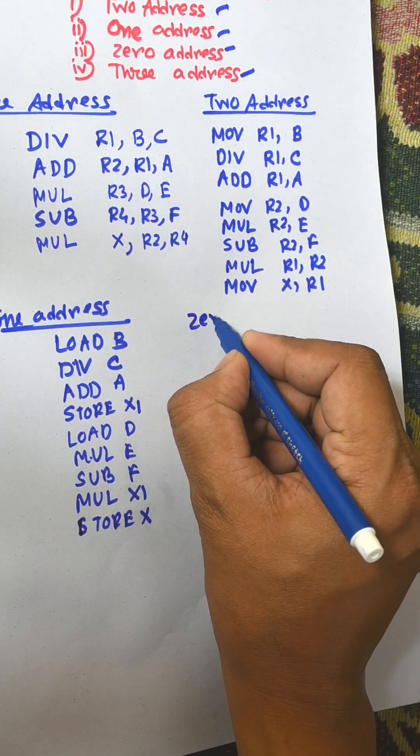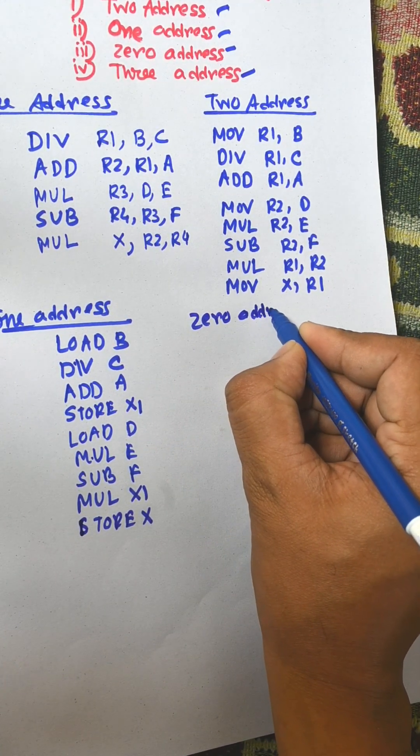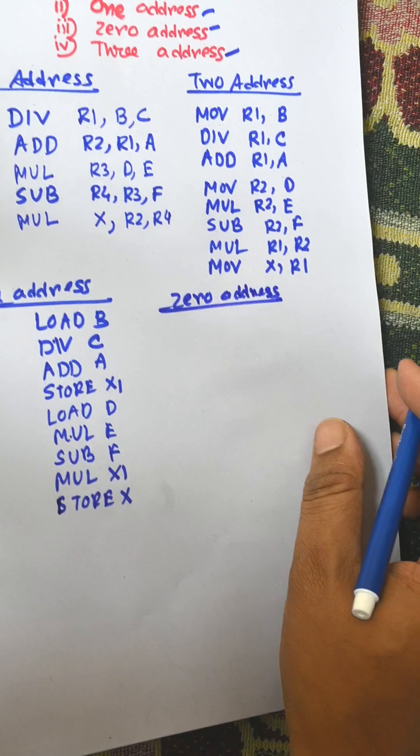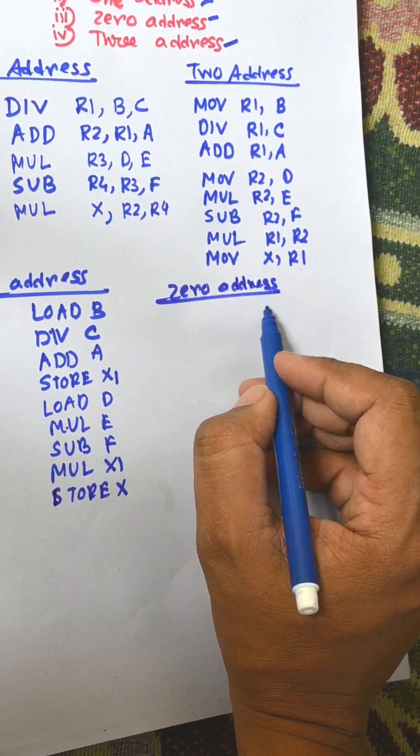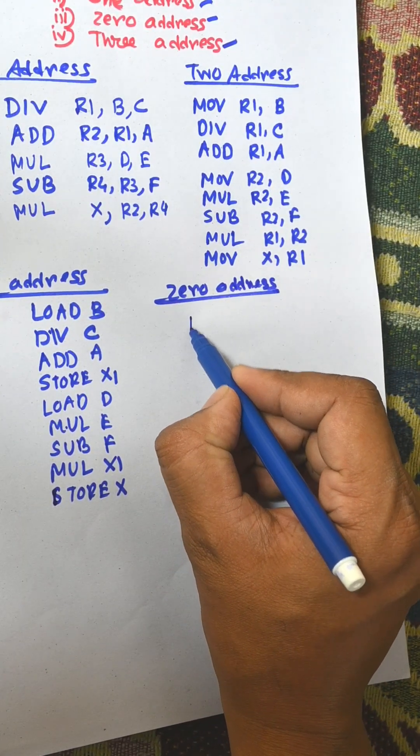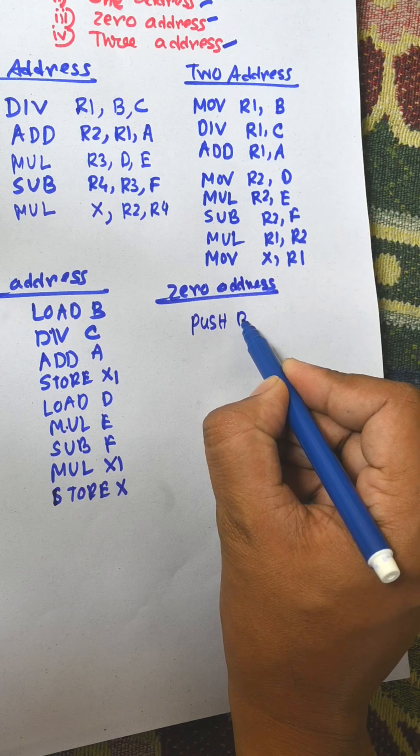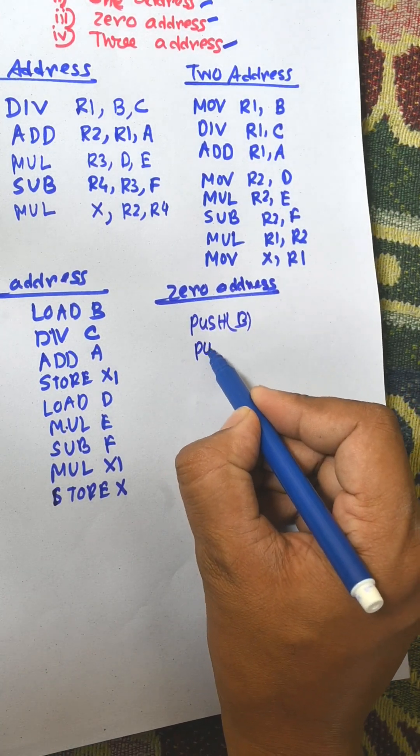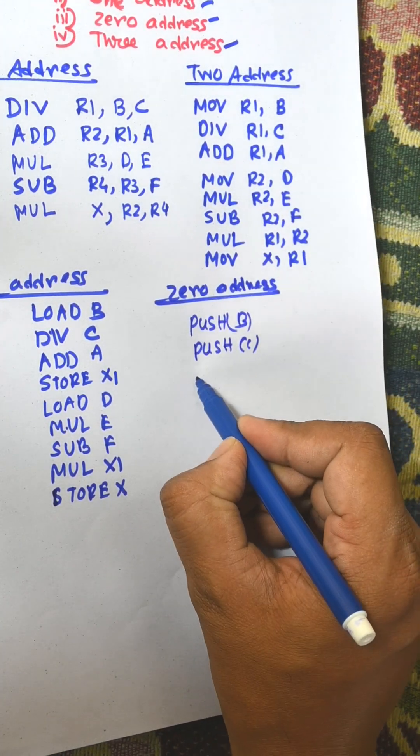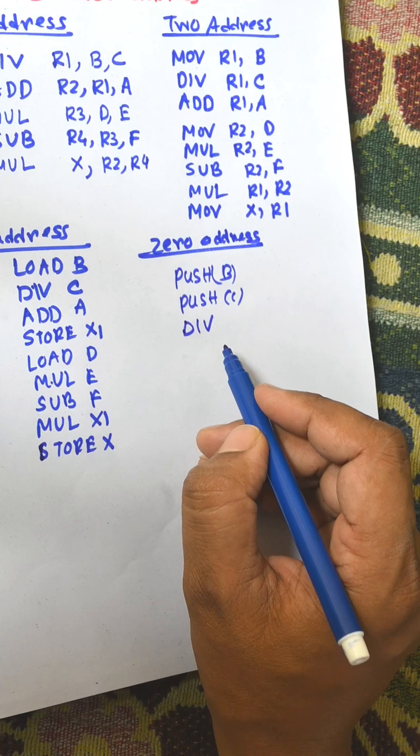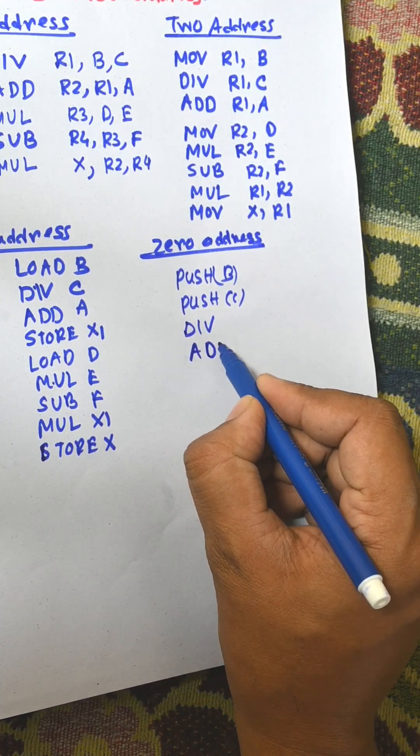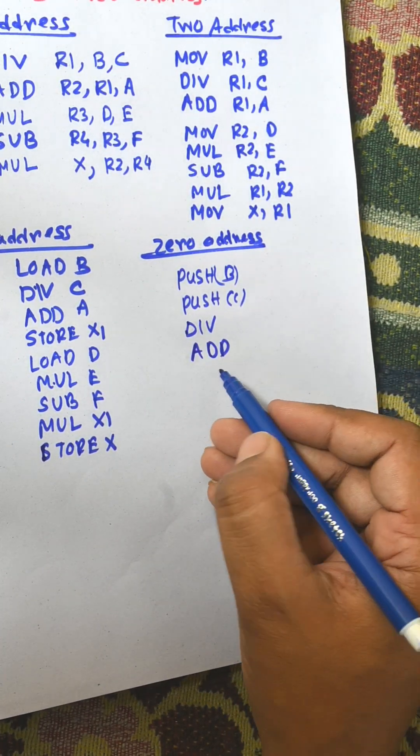Now zero-address instruction format is stack-based instruction format. First one is push B, next one is push C, then division operation and addition operation. Now push